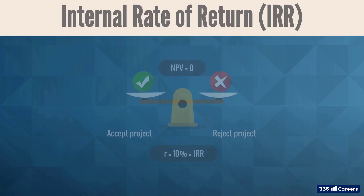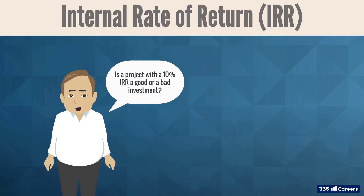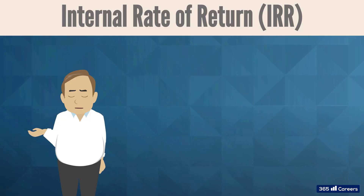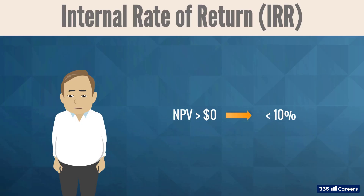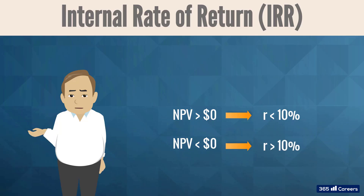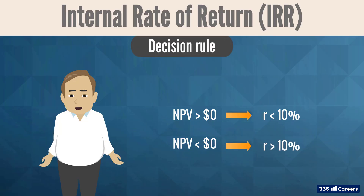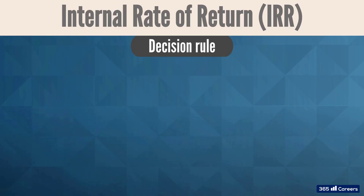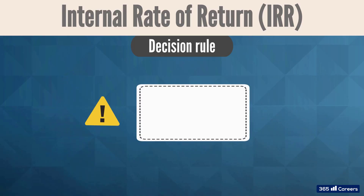Let's answer the following question: is a project with a 10% IRR a good or a bad investment? Well, that depends on the discount rate we will use. NPV is positive for discount rates below 10% and negative for discount rates above 10%. Thus, the IRR rule goes hand-in-hand with the NPV rule introduced earlier. The IRR rule states: accept an investment if its IRR is greater than the discount rate; reject it if the IRR is less than the discount rate; and stay indifferent if the IRR is equal to the discount rate. This rule is very important, so let it stick in your mind.